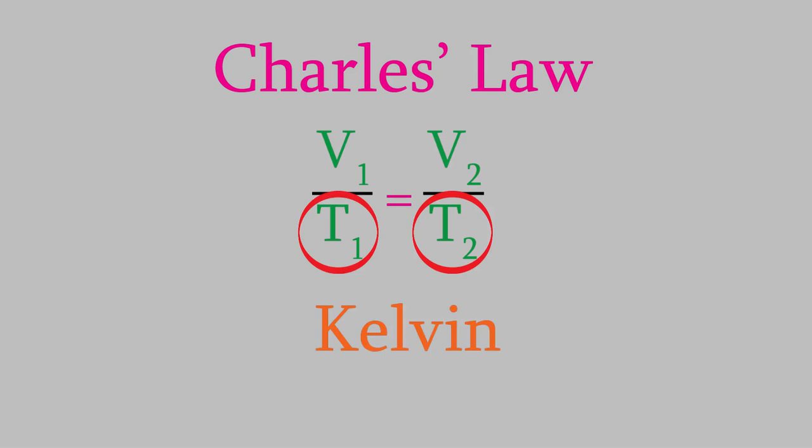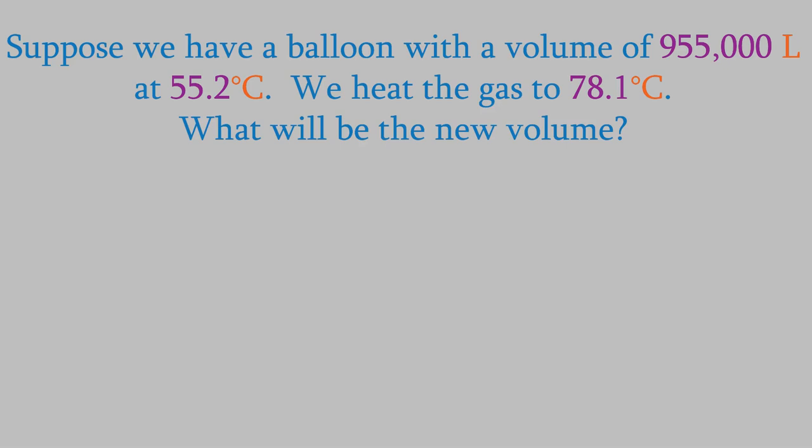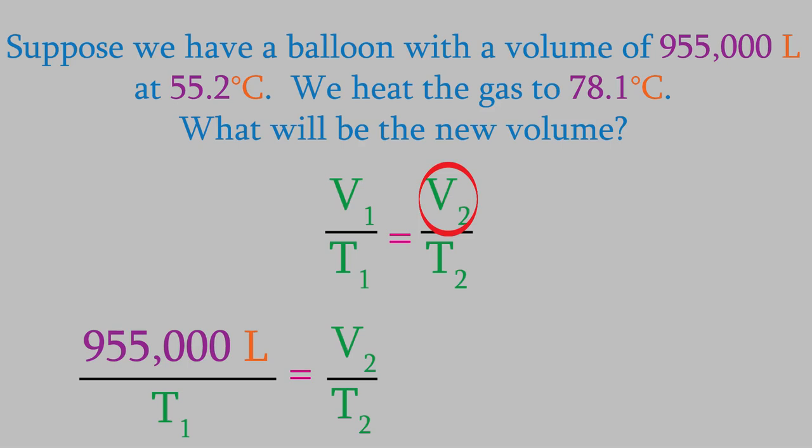For example, suppose we have a hot air balloon with a volume of 955,000 liters at a temperature of 55.2 degrees Celsius, and we then increase the temperature using a flame to 78.1 degrees Celsius. What will be the new volume of the balloon? We'll use Charles's Law to find the answer. We're looking for V2, so we'll just plug our data into the other variables. But remember, we need to use Kelvin for the temperature. Celsius will give us the wrong answer. We convert to Kelvin by adding 273.15 to the Celsius temperature.